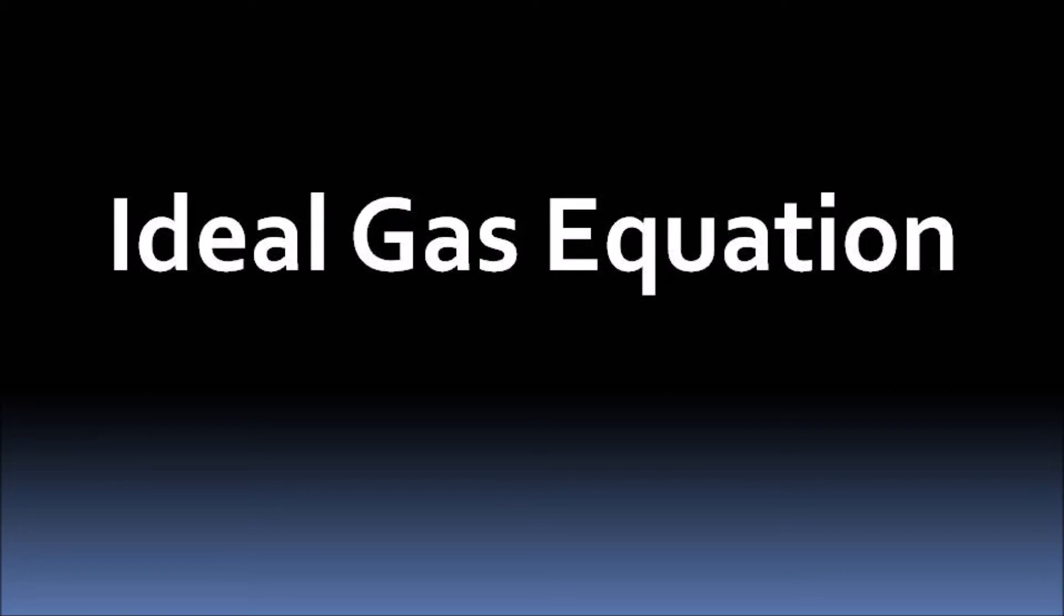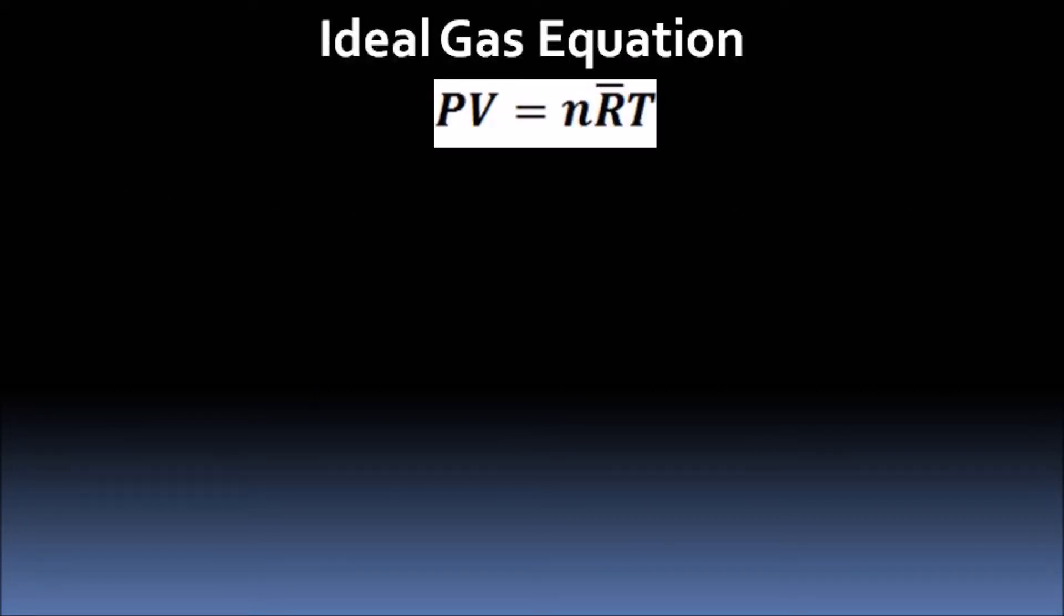It has been observed through experiments that at low densities, the pressure, volume, and temperature behavior of gases can be closely given by the ideal gas equation: PV equals nR̄T.